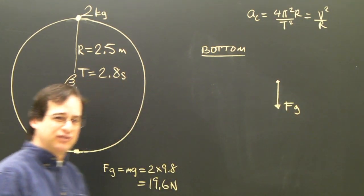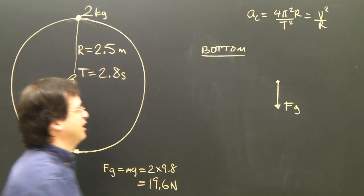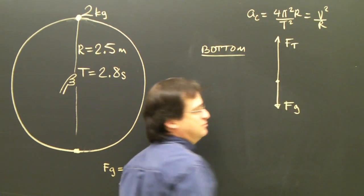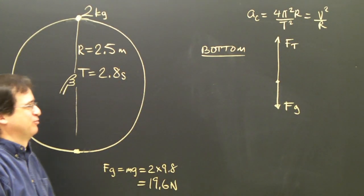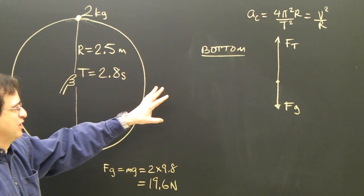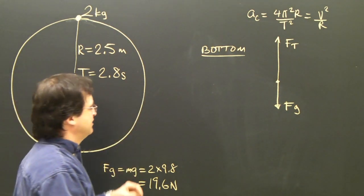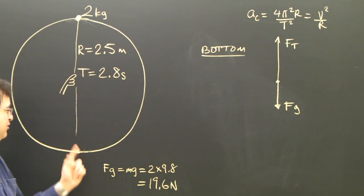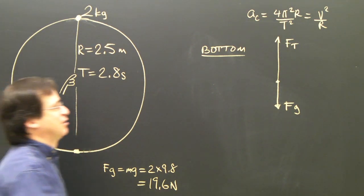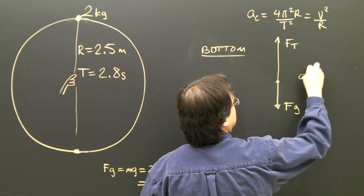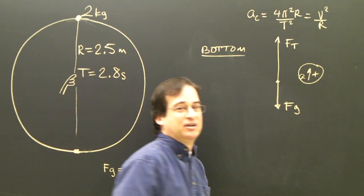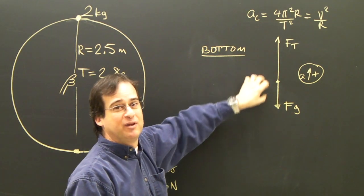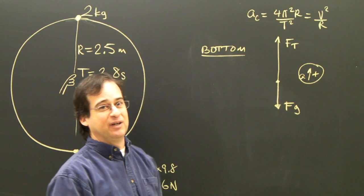Is it sitting on a surface? No, so there's no normal force. Is something pulling on it? Yes, I've got tension. Is there friction? We're going to ignore friction. Okay, I've got my free body diagram. Is it accelerating? At the bottom, anything going in a circle is accelerating towards the center. So at the bottom, the acceleration would be up. So we're going to make up positive. That's why I drew ft larger than fg, because I need more force up than down.